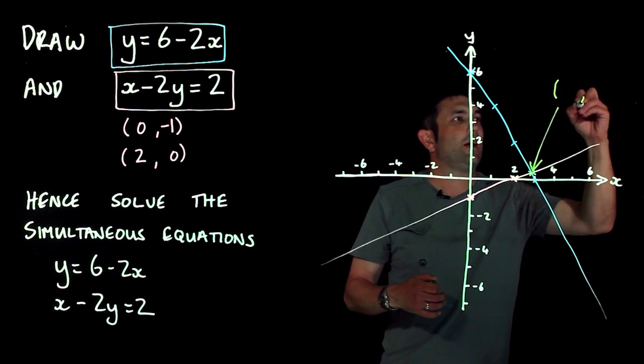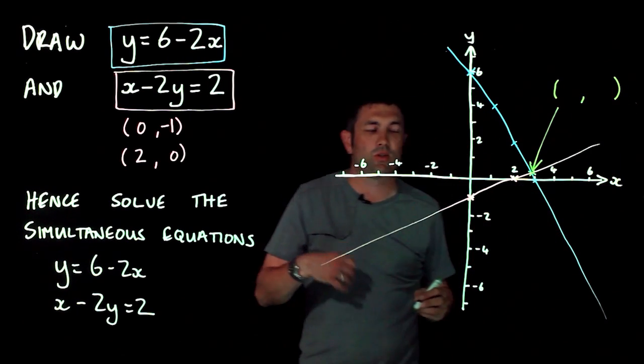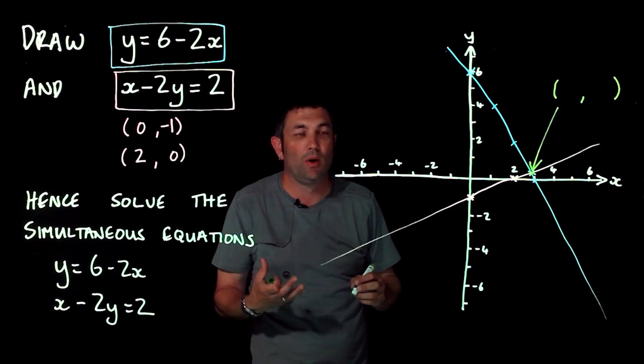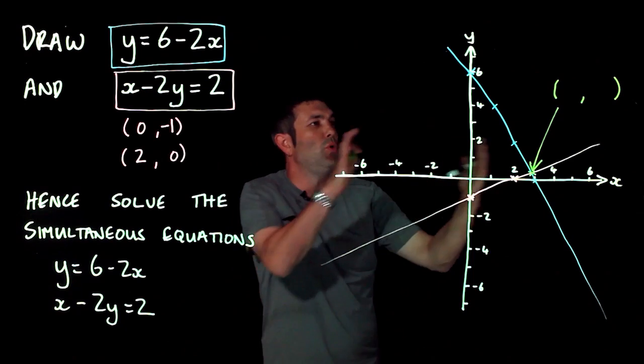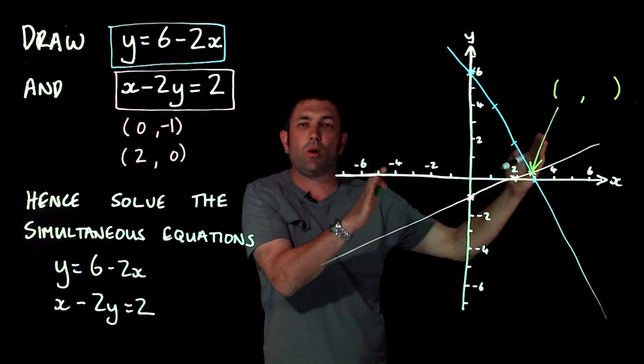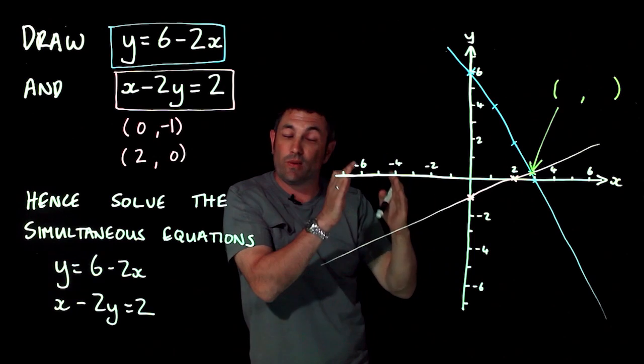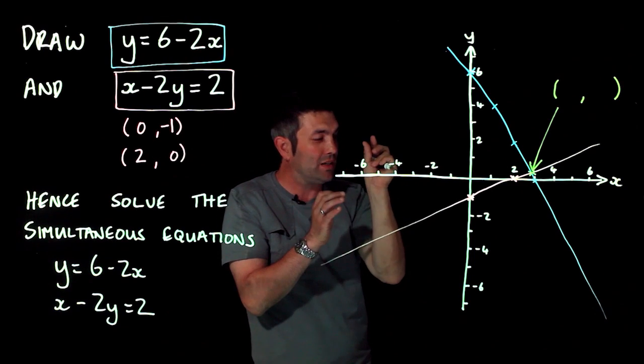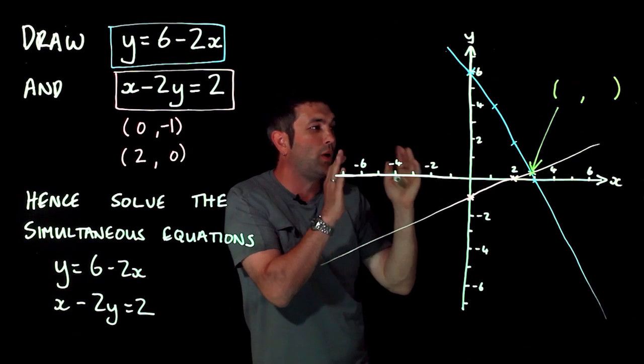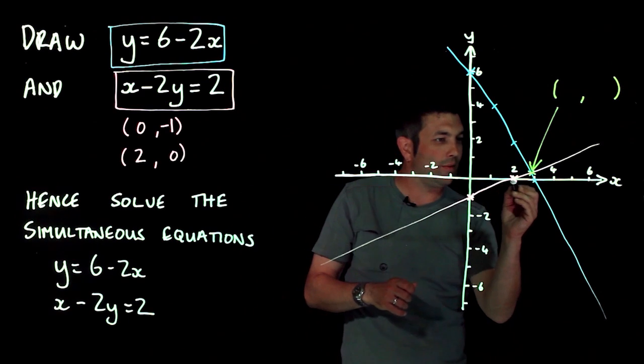You'll notice if you look very carefully that actually they're not whole number answers, and actually that's what tends to happen in these sorts of questions. Normally you'd have this on graph paper so it won't be a problem, you'll be able to read it really accurately. And you'll get a little bit of leeway, but only a very tiny bit, so you need to be as accurate as possible in the mark scheme.